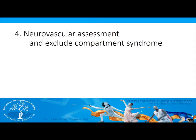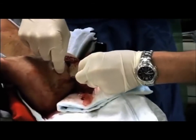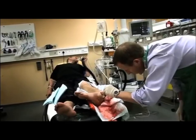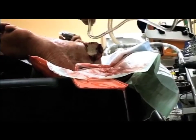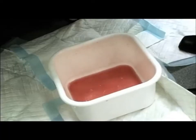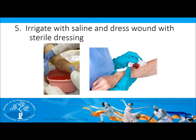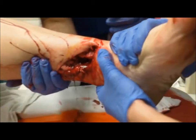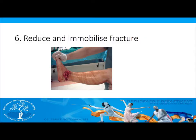You should then do a neurovascular assessment and exclude compartment syndrome. Remove any gross debris and contaminants from the wound and irrigate with copious amounts of saline. Cover the wound with a sterile dressing which should not be removed until the patient is taken to theatre. Reduce the fracture using gentle traction and splint the injured limb.